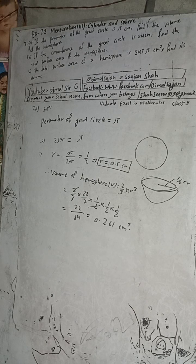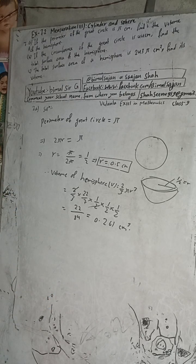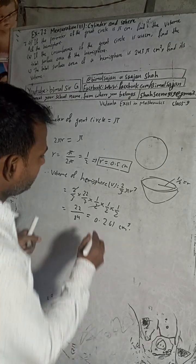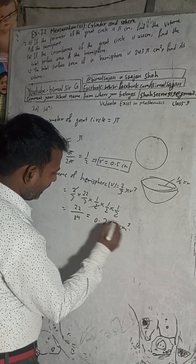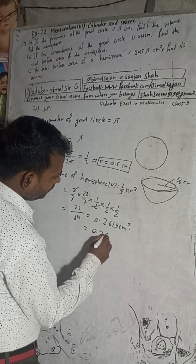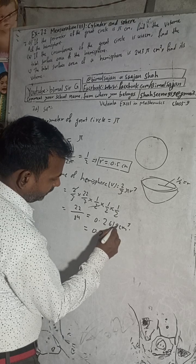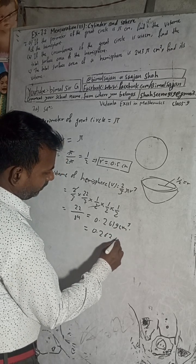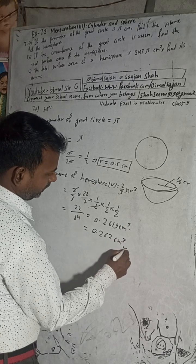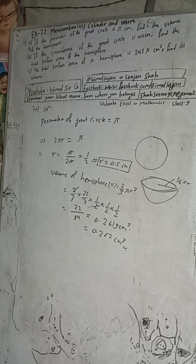In question 7A, by the calculator you will get 2619. When you round up, you get 0.26, and since this digit is greater than 5, it rounds up to 262 cm³. So 262 is the book answer for 7A.